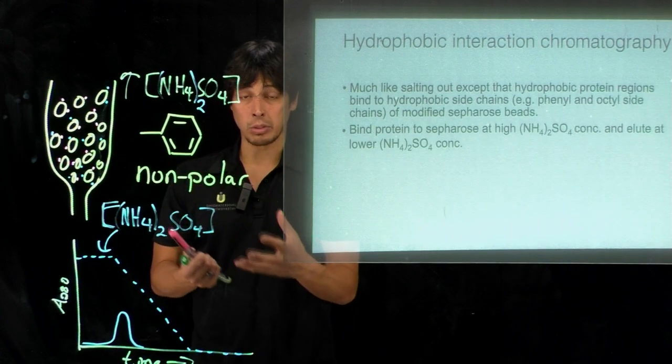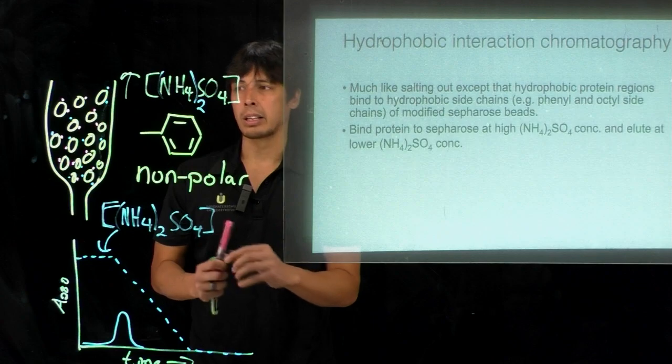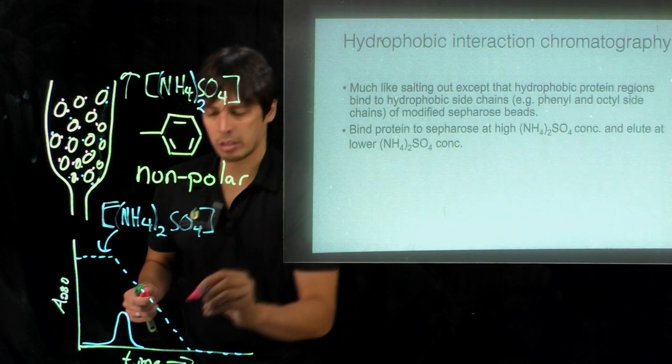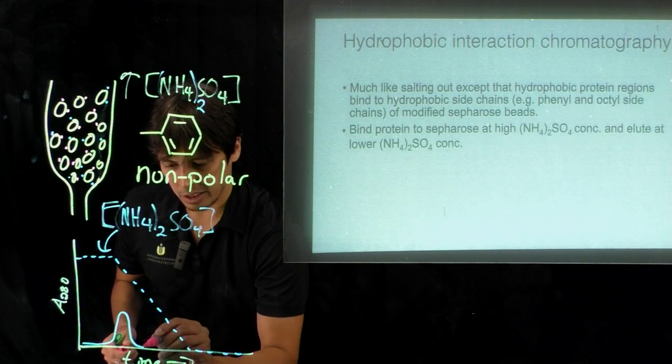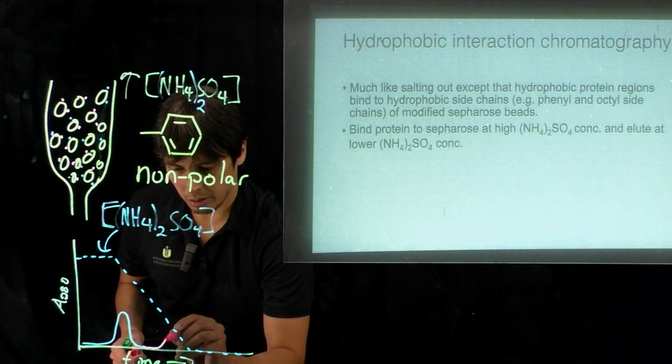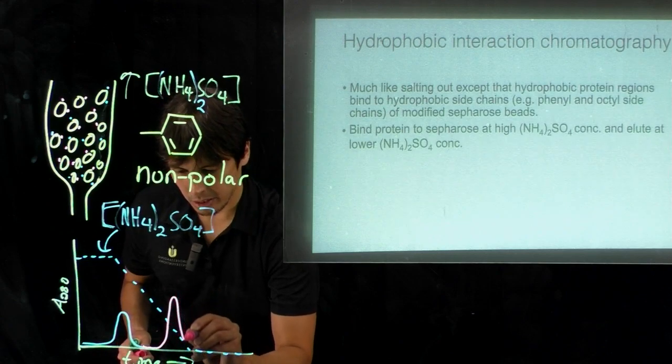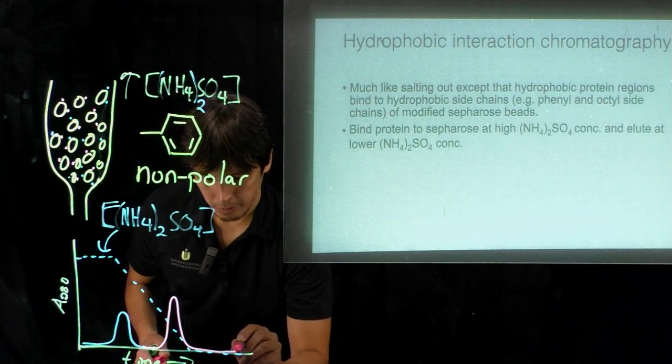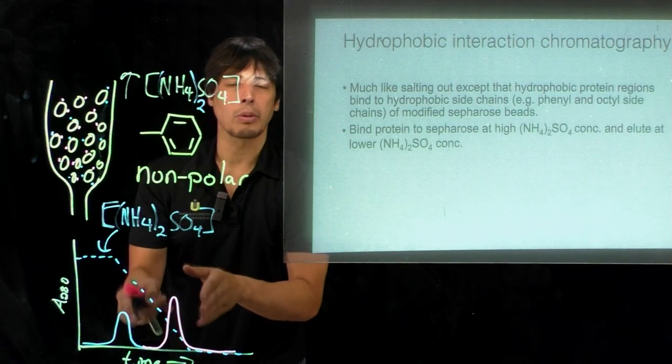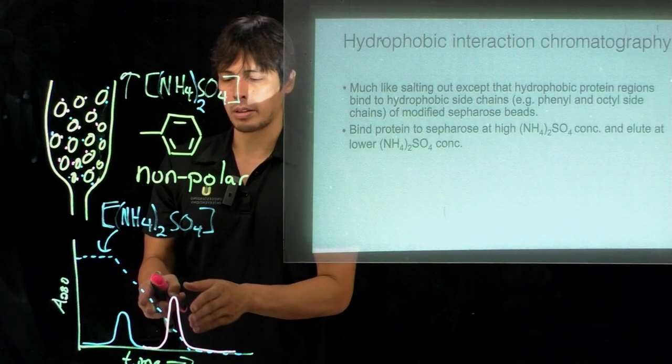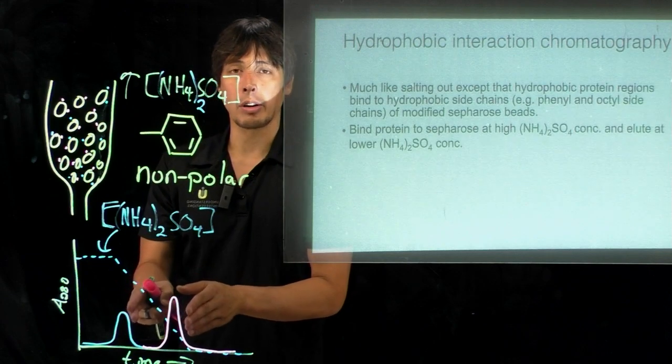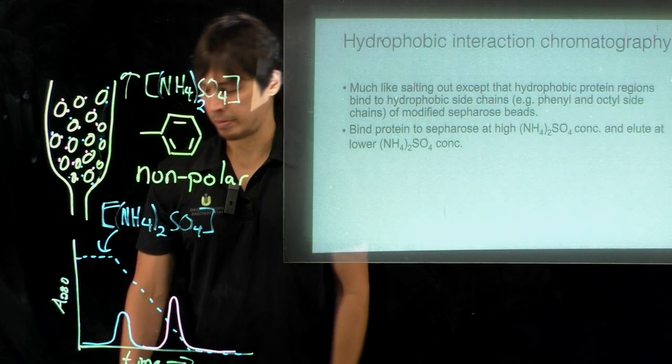But if this red protein is really bound very tightly to the column, to the beads on the column, then it's going to take more time. It's not going to elute until maybe all the salt is gone. In effect, what you get is separation of the two proteins that you can tell from the chromatogram by the two different peaks.